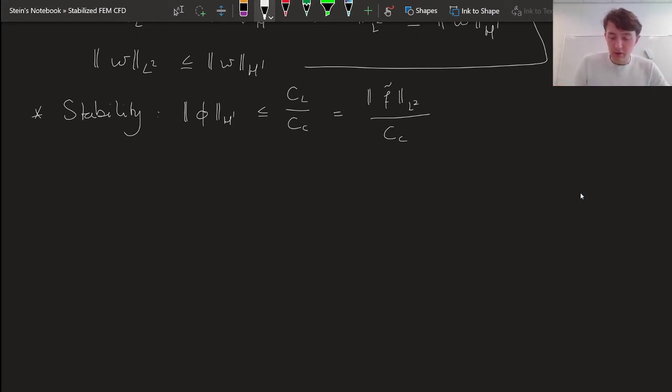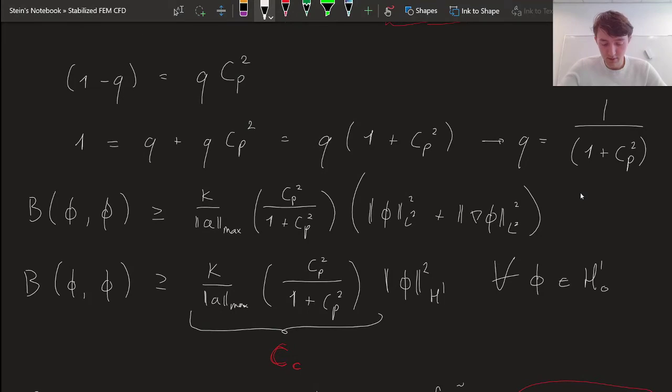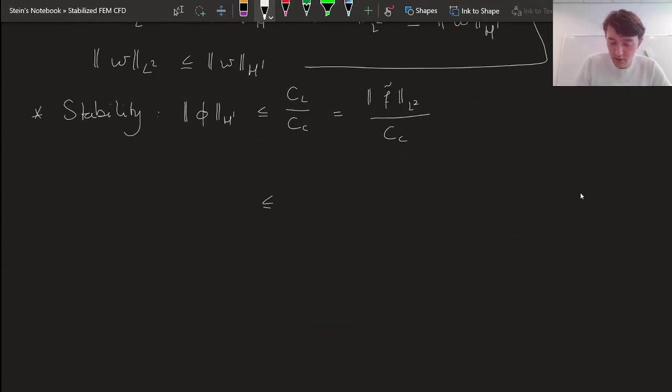So let me then substitute our expression that we obtained for cc. And then we obtain that this is going to be bound from above by the norm maximum advection divided by our diffusion times 1 plus cp square over cp square times the norm of our function f. And again, a small change in f, how much is that going to affect our function phi?